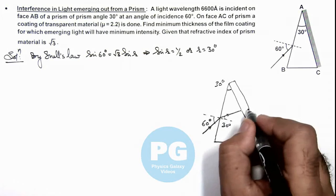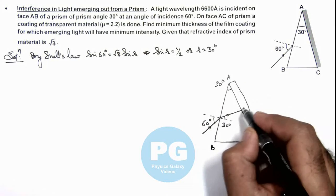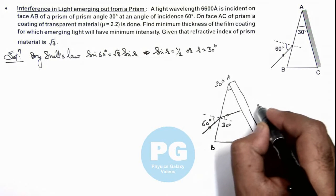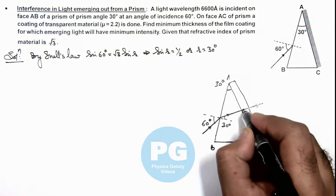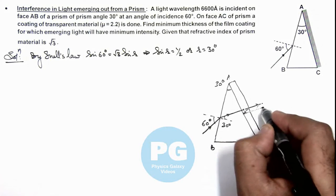So when this is incident on face AC normally, a part of light will be passing directly and a part is reflected, and again reflected from the rear face and comes out.